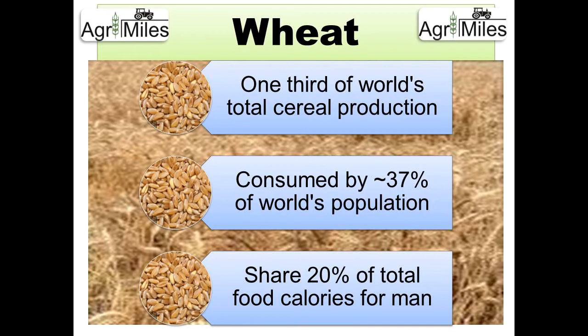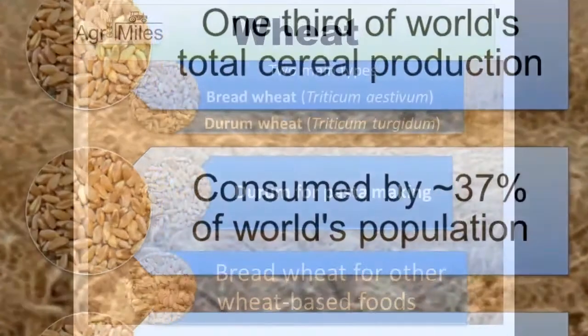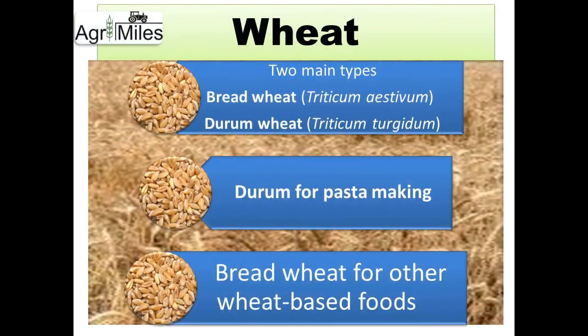There are basically two types of wheat: bread wheat, known as Triticum aestivum, and durum wheat, known as Triticum turgidum. Bread wheat is hexaploid, with a 6x genome, whereas durum wheat is tetraploid, with a 4x genome. Durum wheat is particularly used for pasta making, whereas bread wheat is used for all other wheat-based food products.